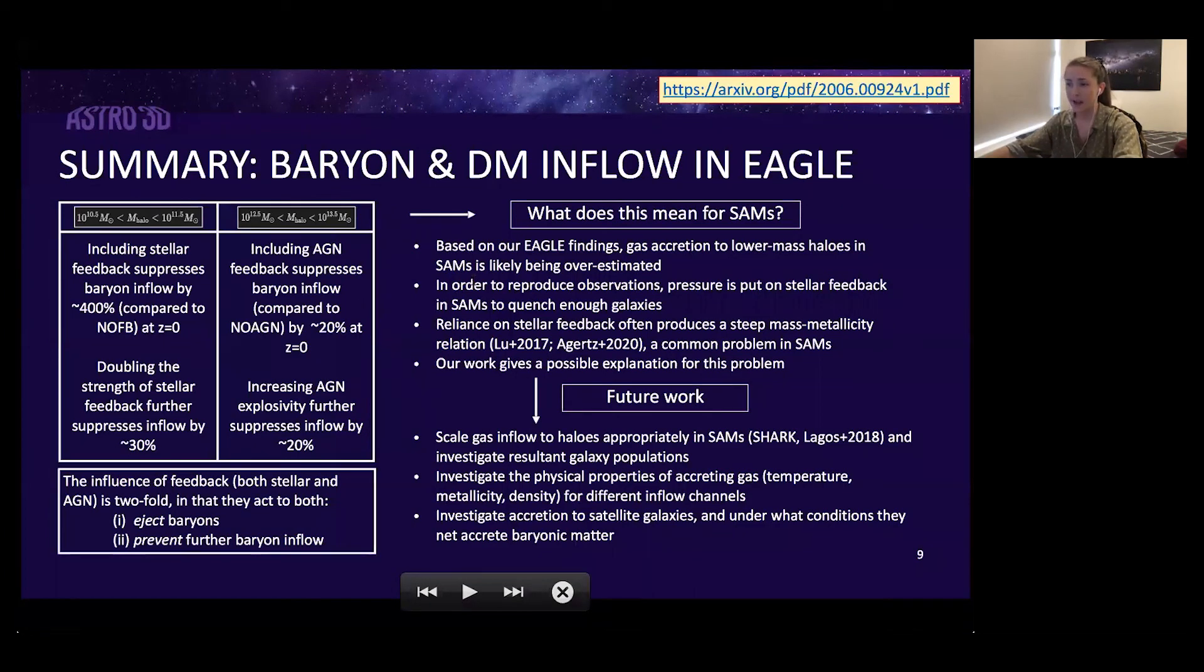We also see that in SAMs, gas accretion rates to low mass halos are probably being overpredicted, which might be putting pressure on the stellar feedback implementations within these SAMs to quench enough galaxies and be able to reproduce observations. The recent works of Liu and Agertz showed quite nicely that strong stellar feedback might be the reason for the steep mass metallicity relations that SAMs tend to produce compared to observations and hydrodynamical simulations. Our results I think provide some nice context for this.